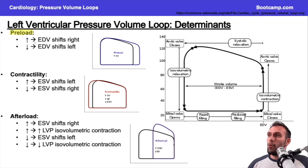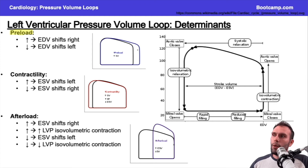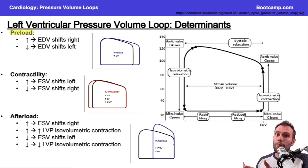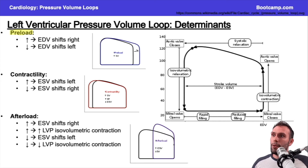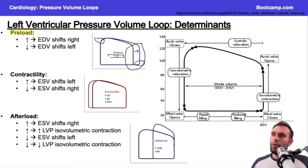With that said, what does preload do? The biggest thing is it shifts the end-diastolic volume to the right. Preload is essentially synonymous with end-diastolic volume — it's the amount of blood in the ventricle at the end of diastole. If I increase venous return, I have more blood in the ventricle. So we're moving the end-diastolic volume rightward. The end-systolic volume doesn't really change with preload, but stroke volume increases because stroke volume equals end-diastolic volume minus end-systolic volume.